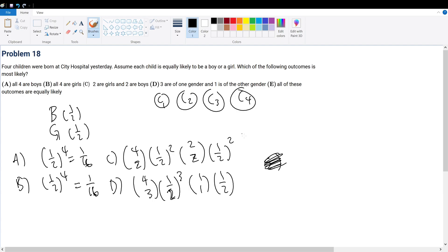Now, what about C? C, well, 2 pick 2 is just 1. 1 pick 1 is just 1. So basically, we all have a half to the 4th. Half to the 4th is 1 over 16.